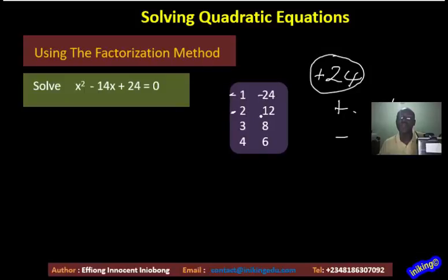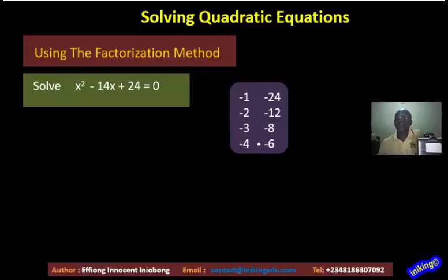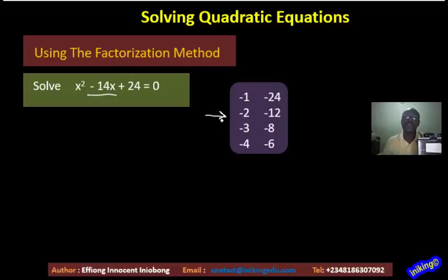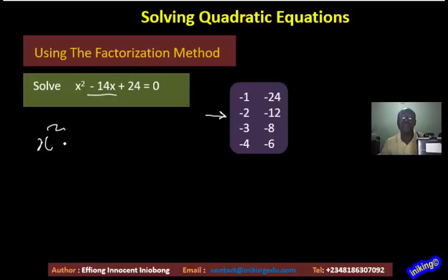So I assign a minus sign to both numbers in each pair. Now, which pair combines to give minus 14? Minus 1 minus 24 cannot do the job, but minus 2 minus 12 will give us minus 14. So I am going to replace minus 14x with minus 2x minus 12x. The next step: x squared, and in place of minus 14x, we bring in minus 2x minus 12x plus 24 equals 0.